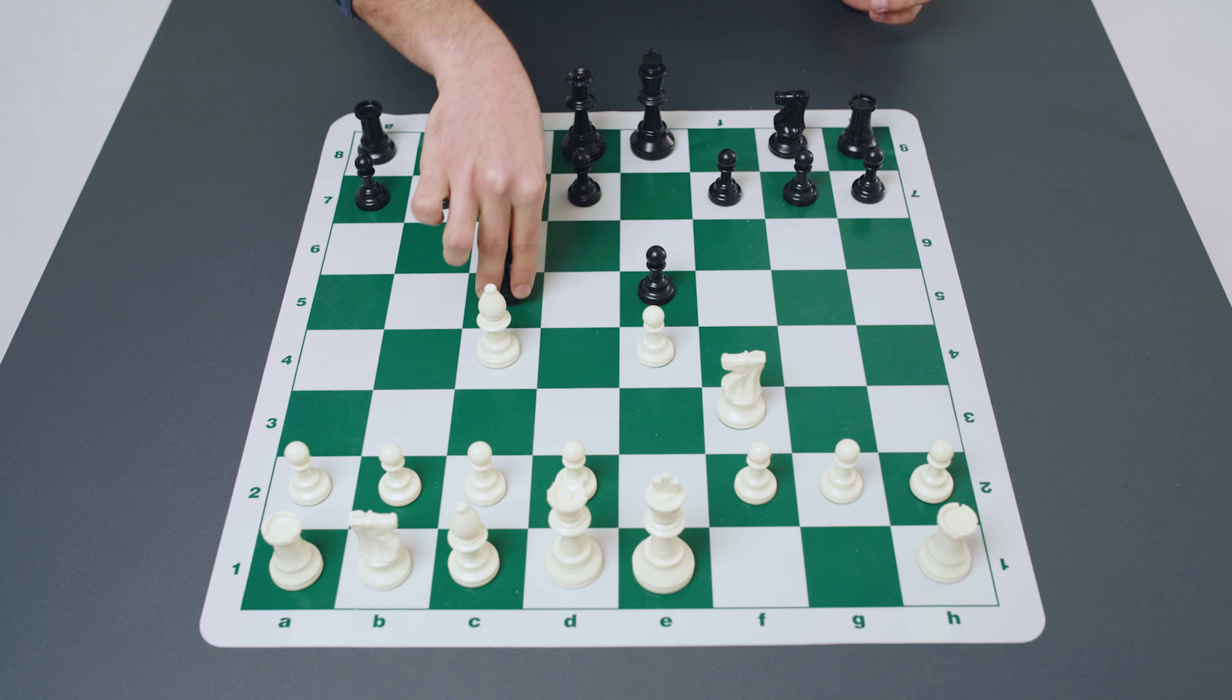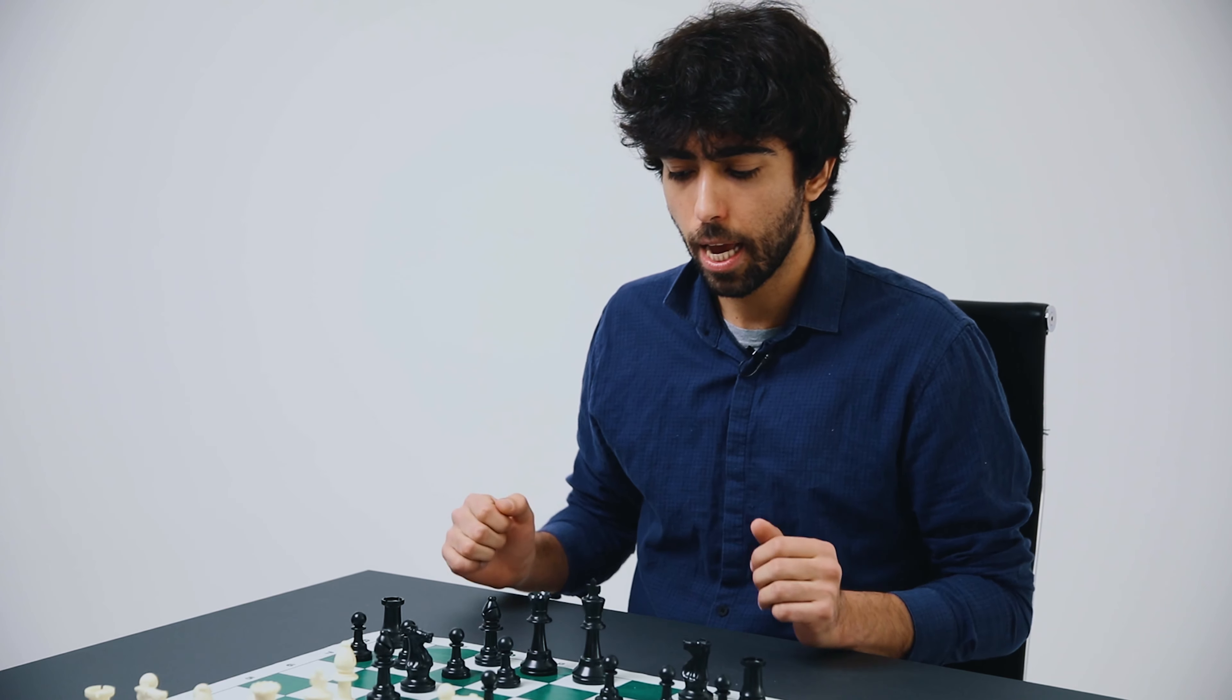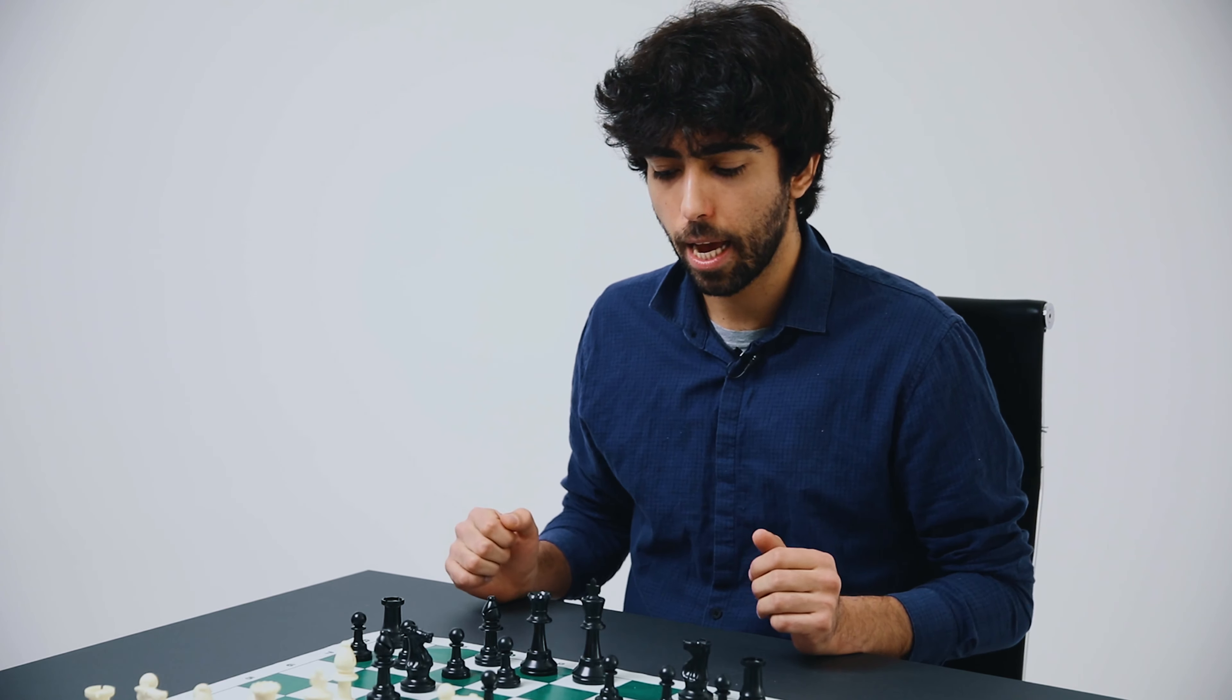The Italian opening begins with the moves pawn to e4, pawn to e5, knight to f3, and after black's response knight to c6 which defends the e5 pawn, here white develops his king's bishop on f1 and brings it to the c4 square.